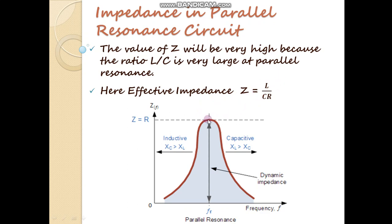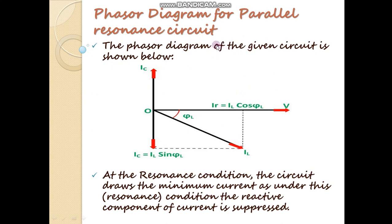Now the phasor diagram for the parallel resonance circuit. Here the voltage is drawn as reference because this is a parallel circuit. IC equals IL sin phi L and IR equals IL cos phi L. Taking the resultant of IC and IR gives the third phasor IL. So at resonance condition the circuit draws the minimum current, as under this resonance condition the reactive component of the circuit is suppressed.